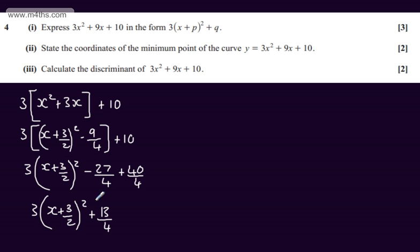In the second part for two marks, we need to state the coordinates of the minimum point of the curve y equals 3x squared plus 9x plus 10. We can see from our completed square form, the x coordinate will be minus 3 over 2 and the y coordinate will be positive 13 over 4. So we get two marks now for the second part of the question.